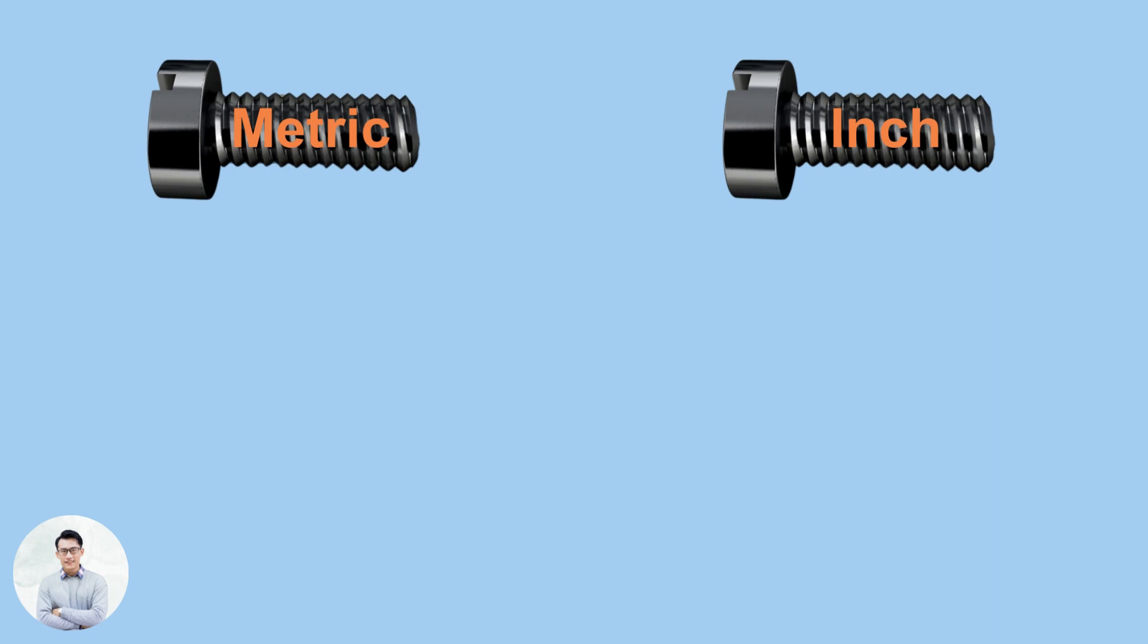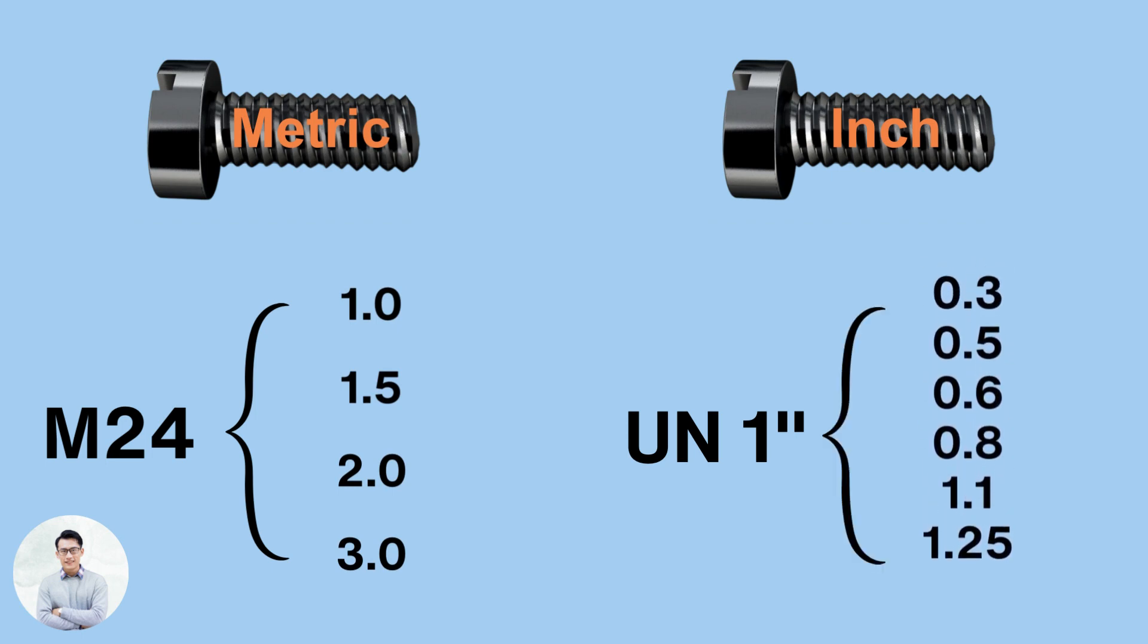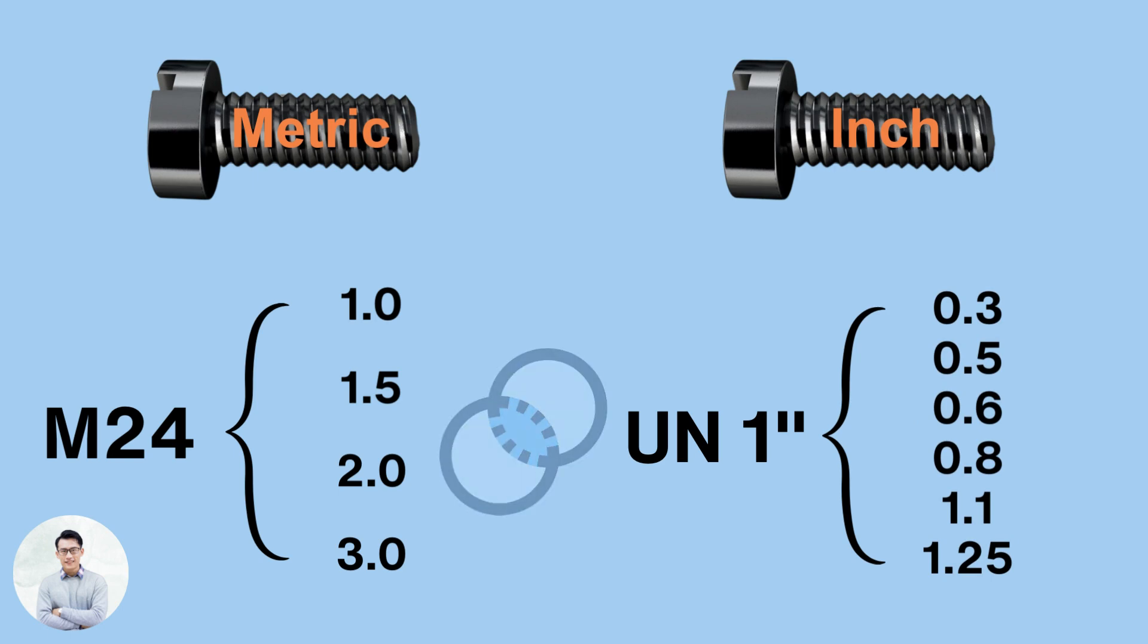For example, the available pitches for M24 are 1, 1.5, 2, and 3 mm. However, the equivalent inch thread of 1 inch offers the pitches 0.3, 0.5, 0.6, 0.8, 1.1, and 1.25. As you can see, if you look at the combined combination from both systems, you have a much wider selection.